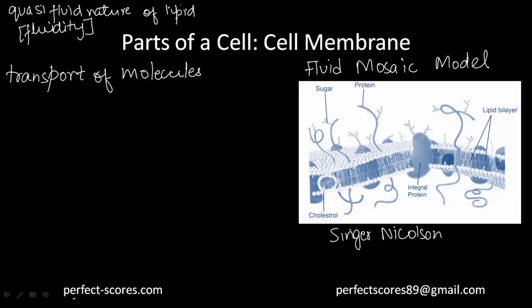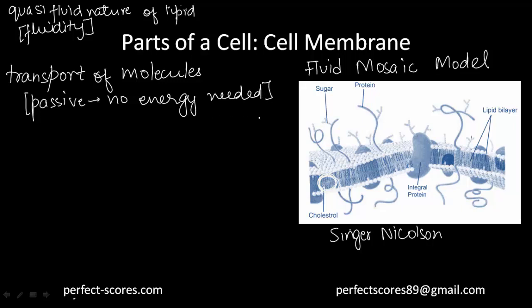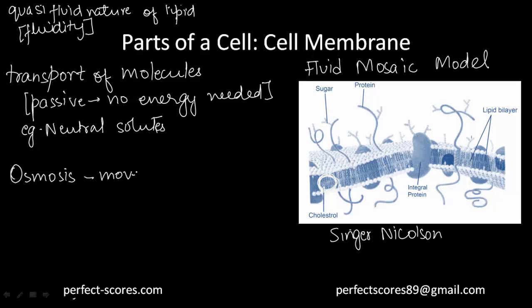Many molecules can passively pass through the membrane without any requirement of energy — that is called passive transport, meaning no energy is needed. For example, neutral solutes can easily move across by simple diffusion, following the concentration gradient from higher to lower concentration. The same applies to water, which can move across the membrane from higher to lower concentration. The movement of water by diffusion is known as osmosis.